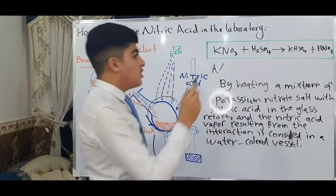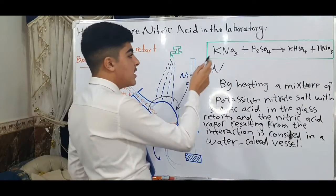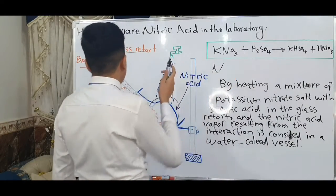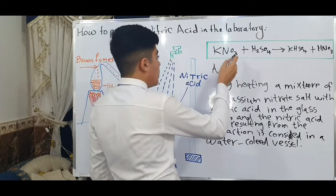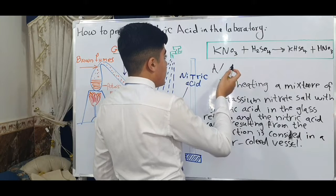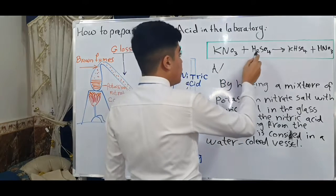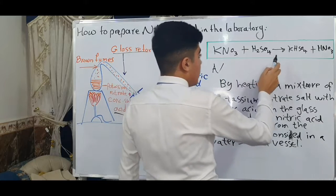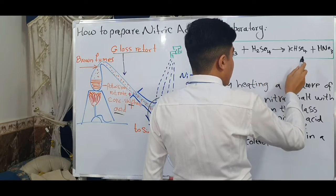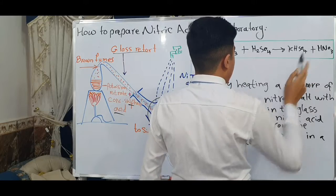HNO3. This is the chemical equation about the preparation of nitric acid in the laboratory. KNO3, potassium nitrate salt, plus H2SO4, the sulfuric acid, equals KHSO4 plus HNO3.